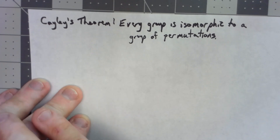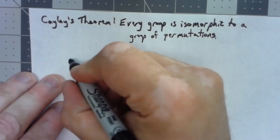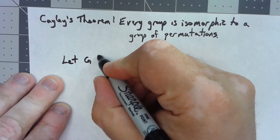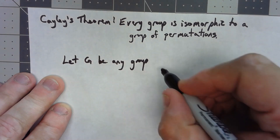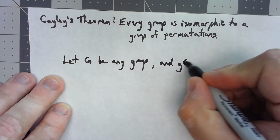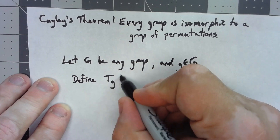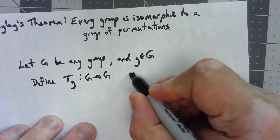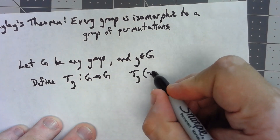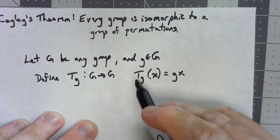What we're going to do is use the group itself to construct a group of permutations. We'll let G be any group. For any element of that group, we're going to define a function t_g that maps G to G, where t_g(x) — x being a group element — is equal to gx using the group operation.